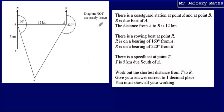This is question 17. We're told that there is a Coast Guard station at point A and at point B, and B is due east of A. The distance from A to B is 12. There is a rowing boat at point R on a bearing of 160 from A and 220 from B. There is a speedboat at point T, and T is 5 kilometres due south of A. We're asked to work out the shortest distance from T to R.